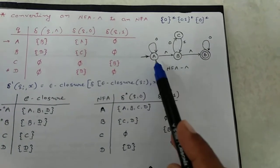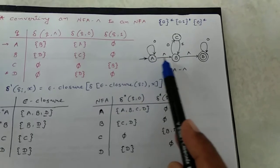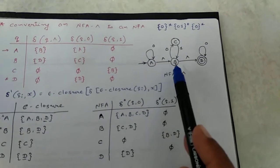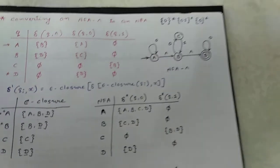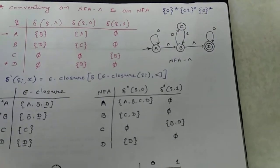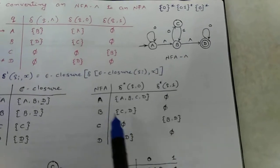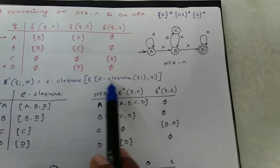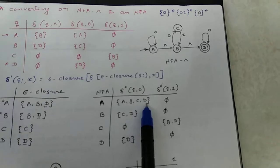Then find epsilon closure of {A, B, D}. Epsilon closure of {A, B, D} means the states themselves: A, B, D. From A to epsilon reach B, from B to epsilon reach D, and on 0 you also reach state C. So epsilon closure of δ(ε-closure(A), 0) is {A, B, C, D}.